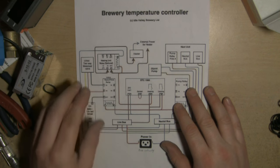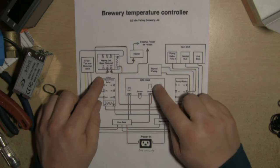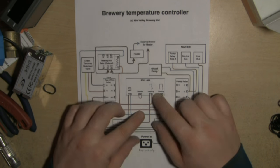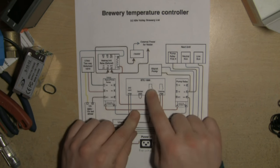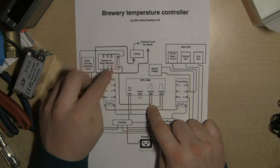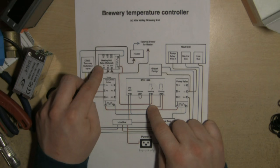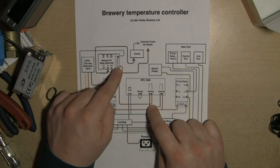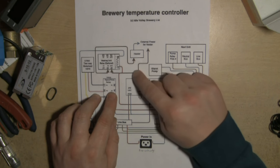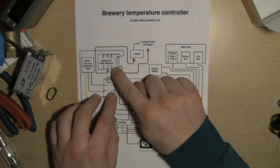You'd have external power for this because your blanket may be consuming upwards of 100 watts and we don't want to put too much load on these temperature controllers. Basically what's going to happen is you've set your temperature controller for 18, the temperature drops to 15.